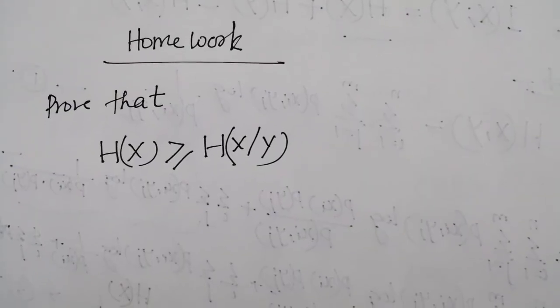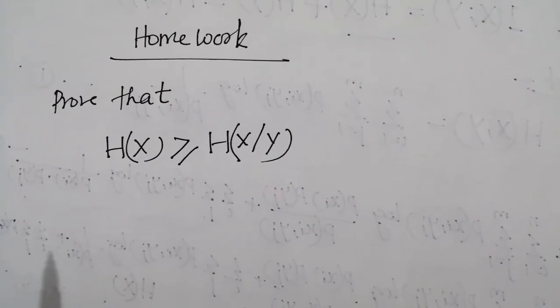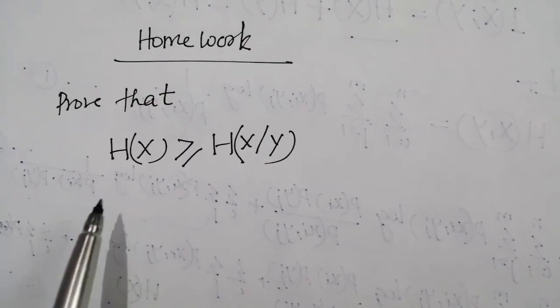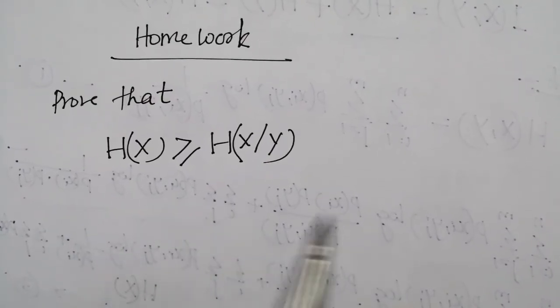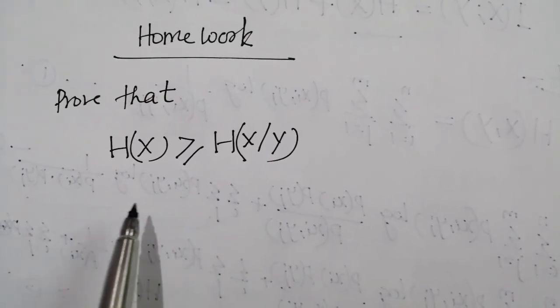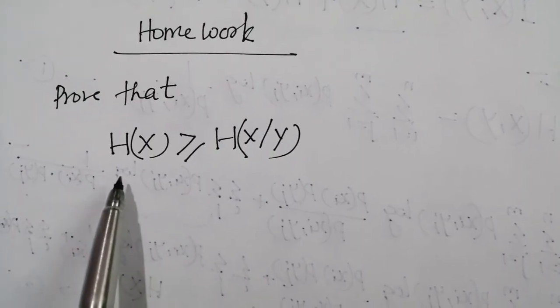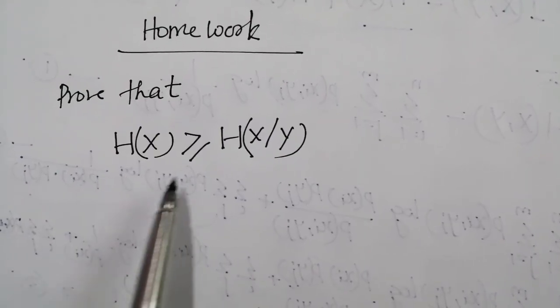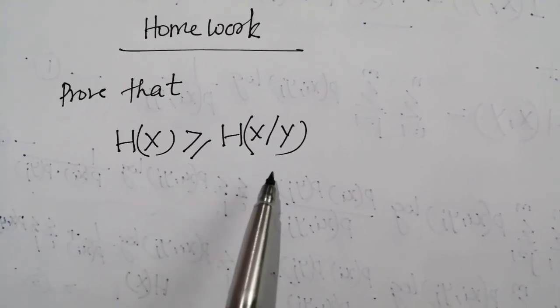As a homework problem: we already know that h(x) ≥ h(x,y). Using the fundamental definition, prove that h(x) ≥ h(x|y). Thank you.